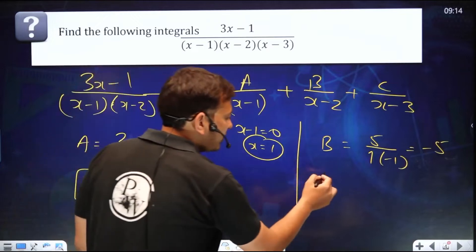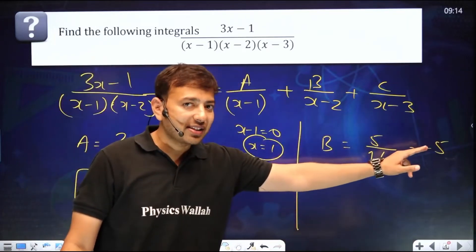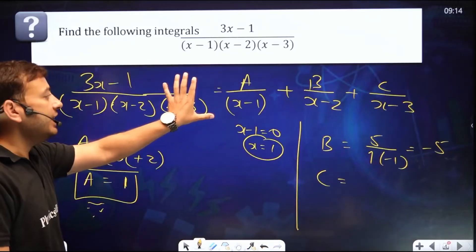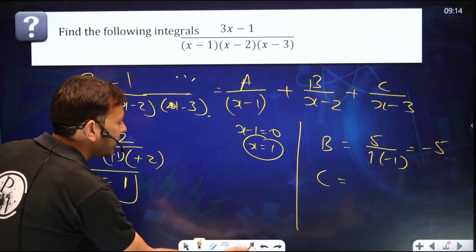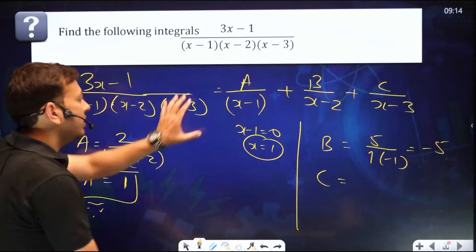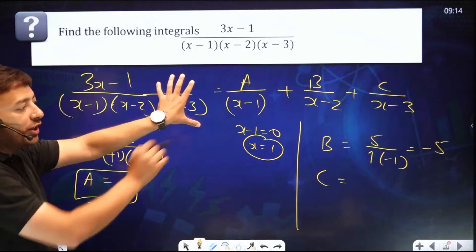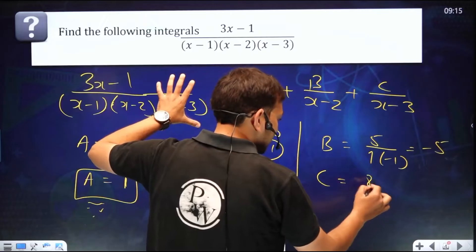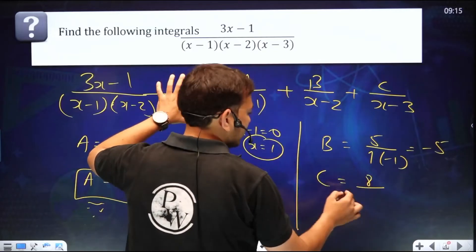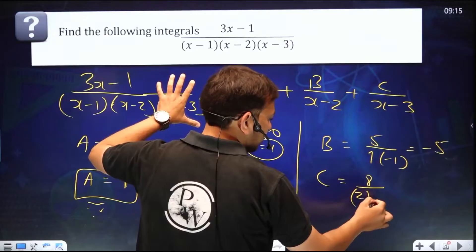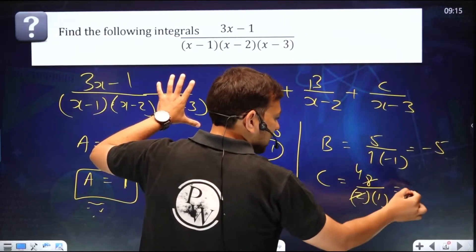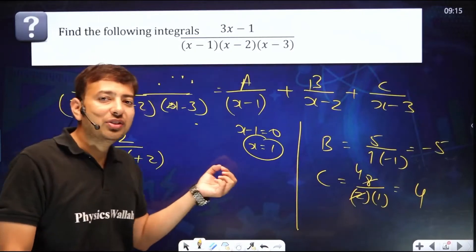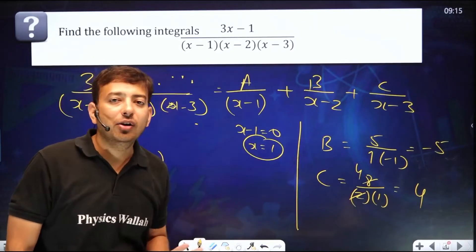For C, the denominator is (x−3), so put x = 3. Hide (x−3) and substitute x = 3 in the remaining part. So C = (3×3 − 1) / [(3−1)(3−2)] = 8 / [(2)(1)] = 4. In very few seconds you are able to get the value of each constant.